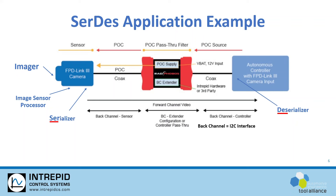Power over coax is ideal to power up cameras, typically from 12 to 35 volts per the POC spec, and typically the deserializer is able to source about 250 milliamps. This value will obviously vary depending on the type of inductor used in the POC filter circuit.